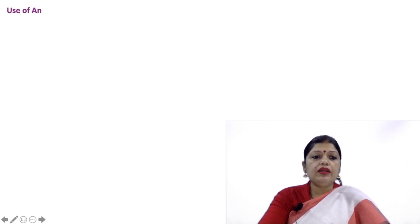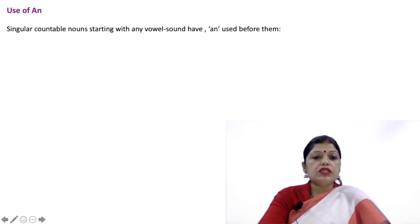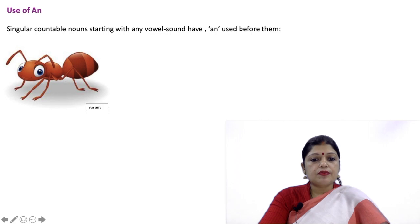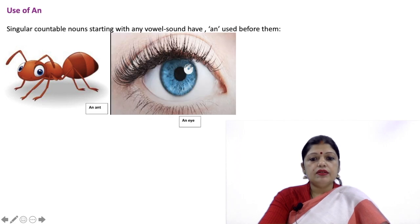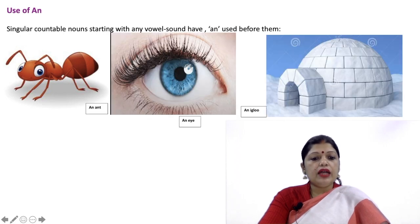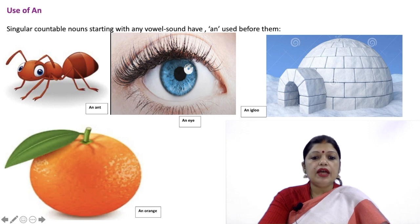Now use of An. Singular countable nouns starting with any vowel sound have An used before them. Like an ant, an eye, an igloo, an orange.